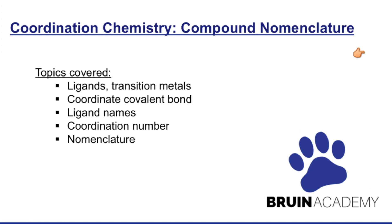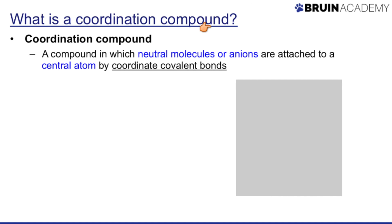Coordination chemistry is all about nomenclature, or naming compounds, and that's really all you need to know for coordination chemistry. First things first: what is a coordination compound? Basically, it's a compound in which you have neutral molecules or anions attached to a central atom via a unique set of bonds called coordinate covalent bonds.